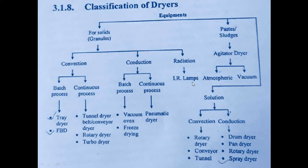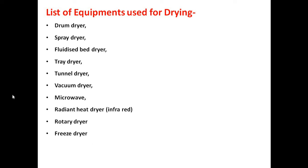For radiation drying, IR lamps are used. For paste or sludges (semi-solid), an agitator dryer — divided into vacuum and atmospheric type — is used. For solutions, convection uses rotary, conveyor, or tunnel dryers; conduction uses drum dryer, pan dryer, and spray dryer. Equipment used in pharmaceutical drying includes: drum dryer, spray dryer, fluidized bed dryer (FPD), tray dryer, tunnel dryer, vacuum dryer, microwave dryer, radiant heat/infrared dryer, rotary dryer, and freeze dryer.